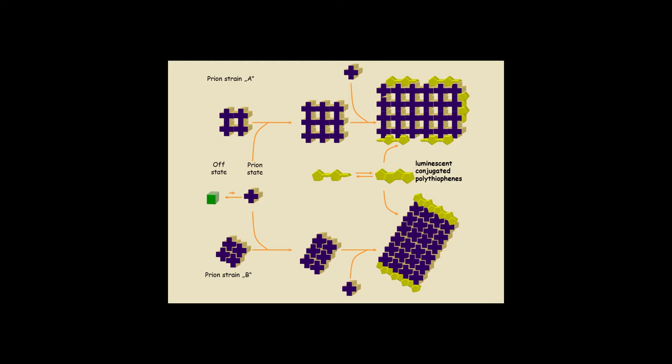It's a misfolded prion protein, so you have the cellular normal prion protein, then you have the misfolded protein, and then the misfolded protein will aggregate and will create the actual transmissible prion, but the quaternary structure, the supramolecular arrangement of the prion may actually be different.